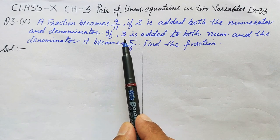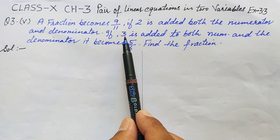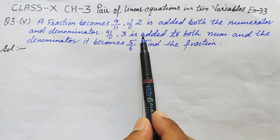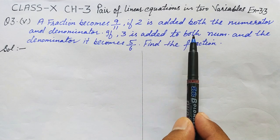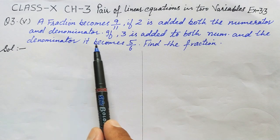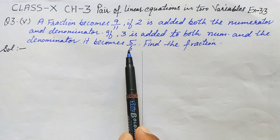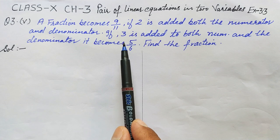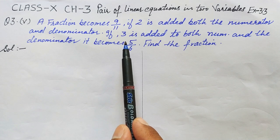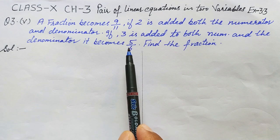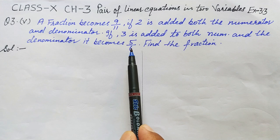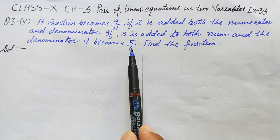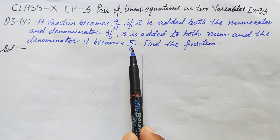For the second condition, he is saying that 3 is added to both numerator and denominator and it becomes 5 over 6. Adding 3, the fraction becomes (x+3) over (y+3), which is equal to 5 over 6. This gives us our second linear equation.